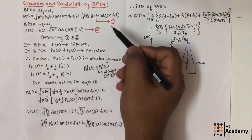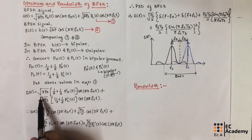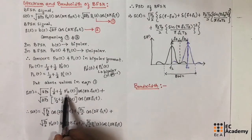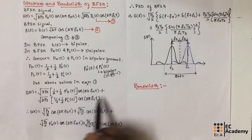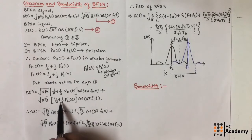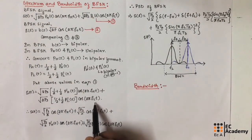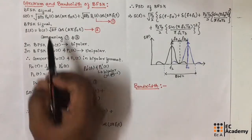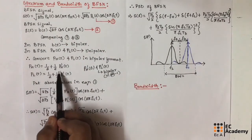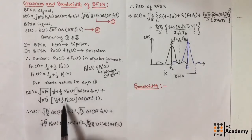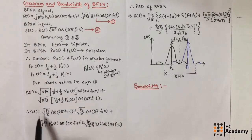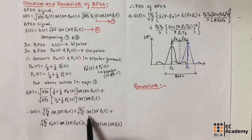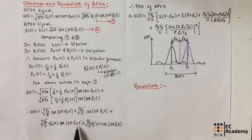Now let us substitute these two values into equation number 1. We get s(t) = sqrt(2Ps) * (1/2 + (1/2) * ph'(t)) * cos(2π fh t) + sqrt(2Ps) * (1/2 + (1/2) * pl'(t)) * cos(2π fl t). Simplifying this, we get s(t) = sqrt(Ps/2) * cos(2π fh t) + sqrt(Ps/2) * cos(2π fl t) + sqrt(Ps/2) * ph'(t) * cos(2π fh t) + sqrt(Ps/2) * pl'(t) * cos(2π fl t).